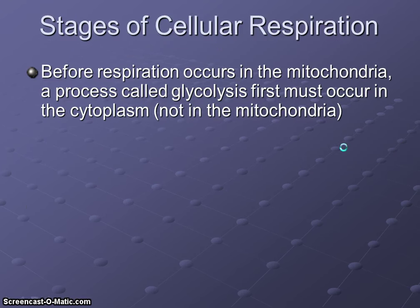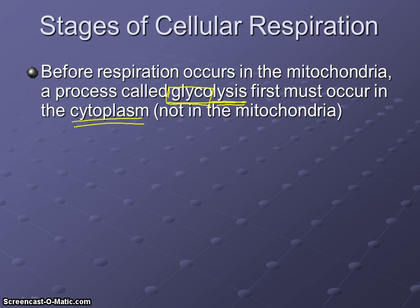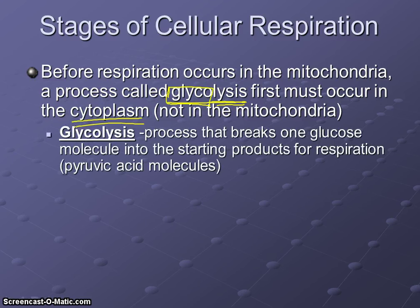Now, the stages of cellular respiration. There's kind of a pre-stage that has to happen before cellular respiration, and that process is called glycolysis. 'Lysis' means to split, and 'glyco' refers to glucose — so this is the stage where we split glucose. This happens outside the mitochondria, in the cytoplasm. The definition of glycolysis: it's the process that breaks down one glucose molecule into the starting products of respiration, called pyruvic acid molecules.